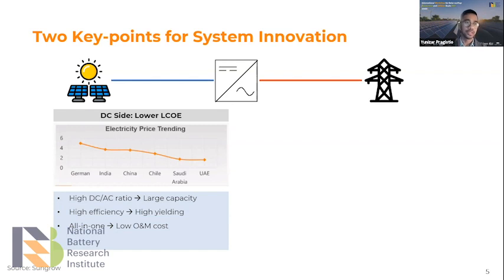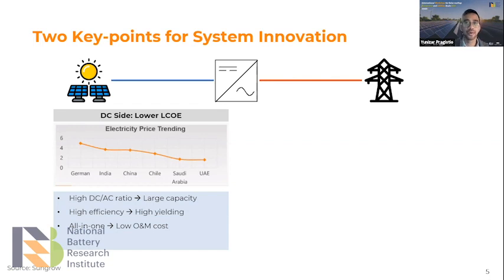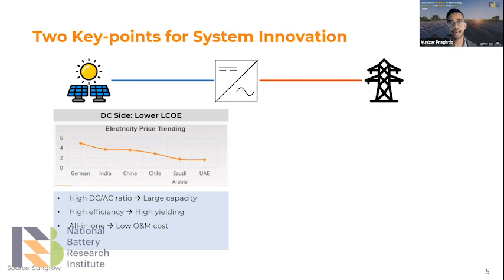From the DC side we see the trend of lower LCOE — Levelized Cost of Electricity — which is how we determine the energy price. From trends, in Germany it's around five cents per kilowatt-hour, while in UAE and Saudi Arabia it can be achieved at two cents per kilowatt-hour.